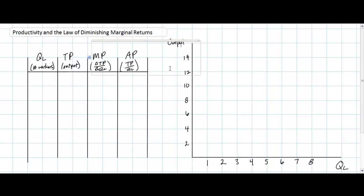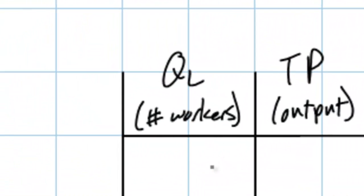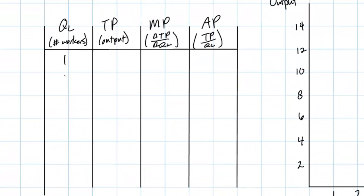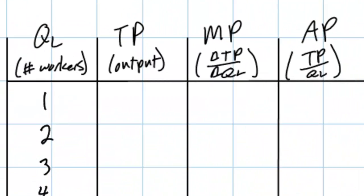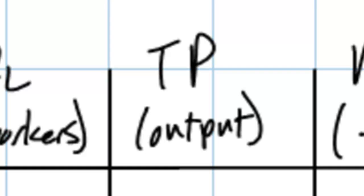When conducting this simulation it's important to have a data table prepared so that you can record the output of your workers at the end of each one-minute round. The first thing we record is the quantity of workers. In my class we went up to eight workers, so I'm going to put the numbers one through eight in the left column of our table. The next piece of information we record is the total product — the output at the end of each round after one additional worker has been added. I'm going to fill in the data that we found when we conducted this experiment in my class this week.